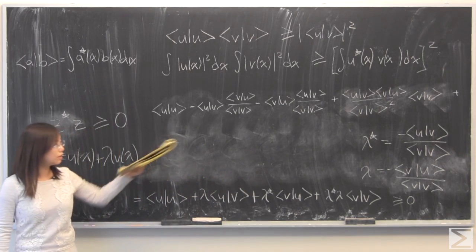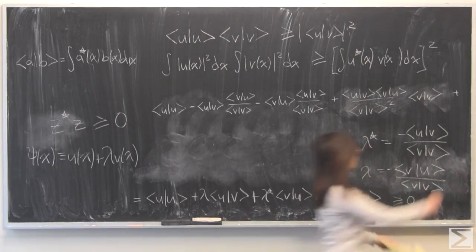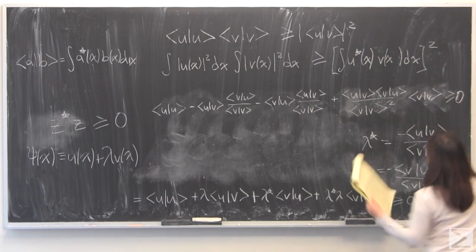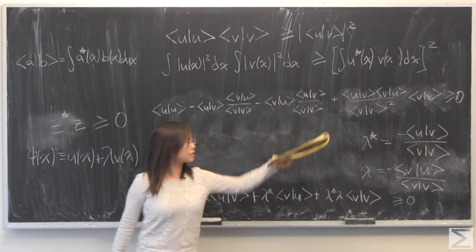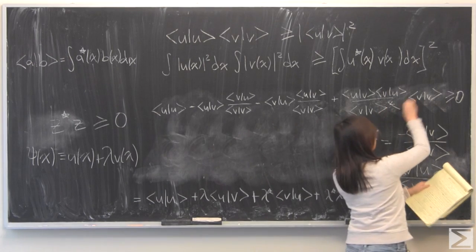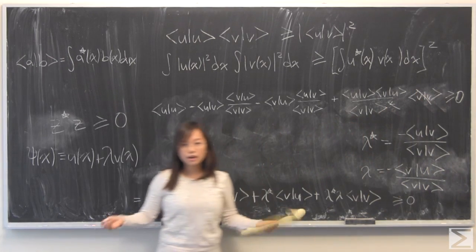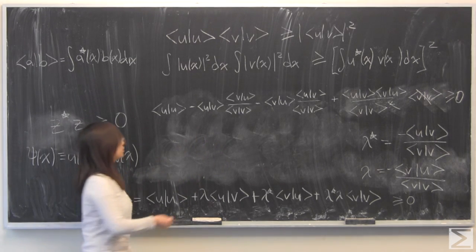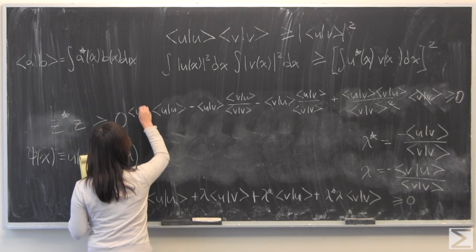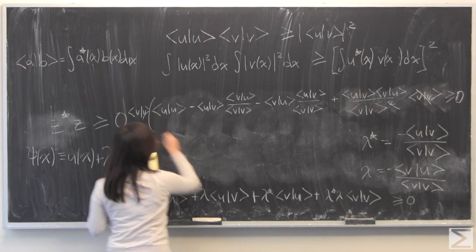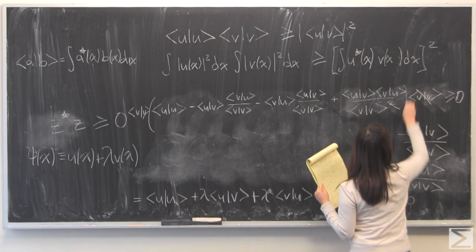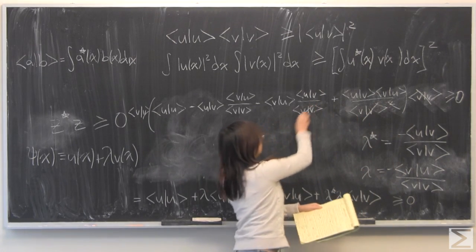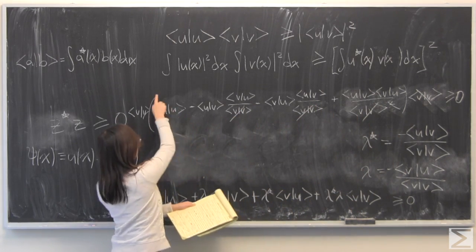So substituting that in gives you the following. And this is all greater than or equal to zero. And from here, I'm going to start by noticing that this cancels out with this. Now I'm going to multiply both sides by the bra ket inner scalar product of V. So when I do that, this is going to vanish. This, and we can just multiply this with that.